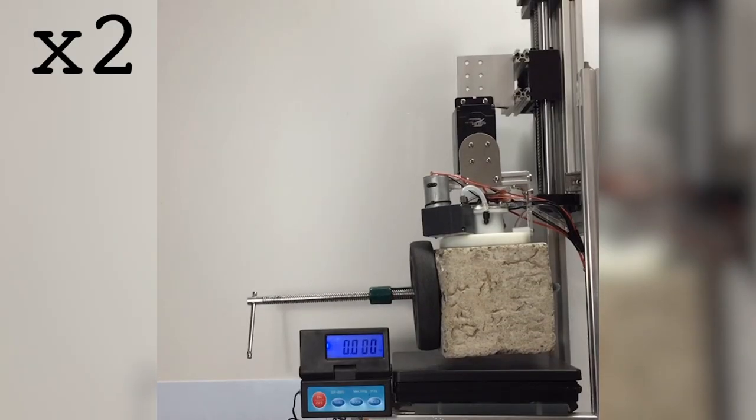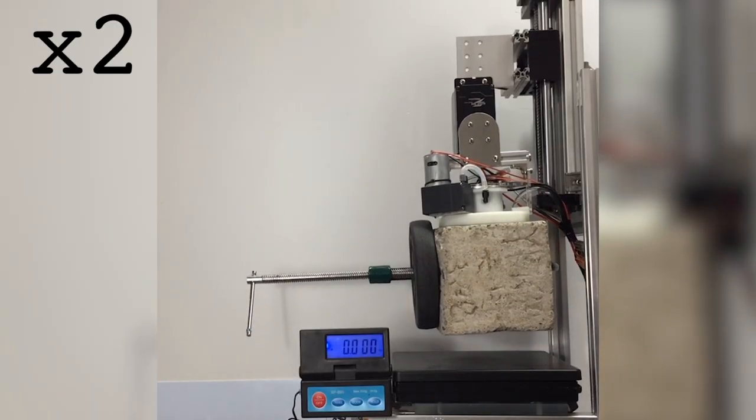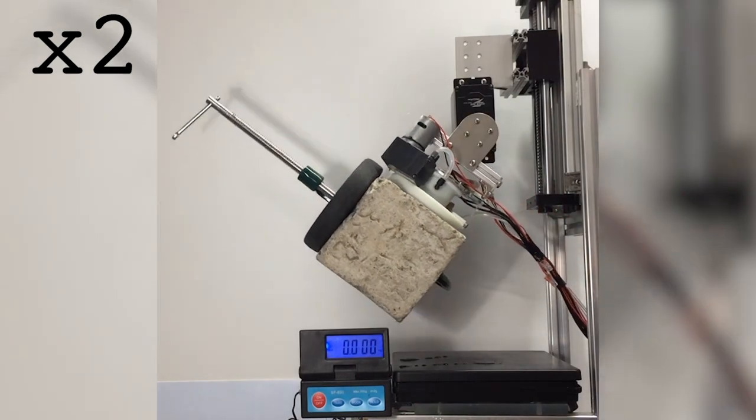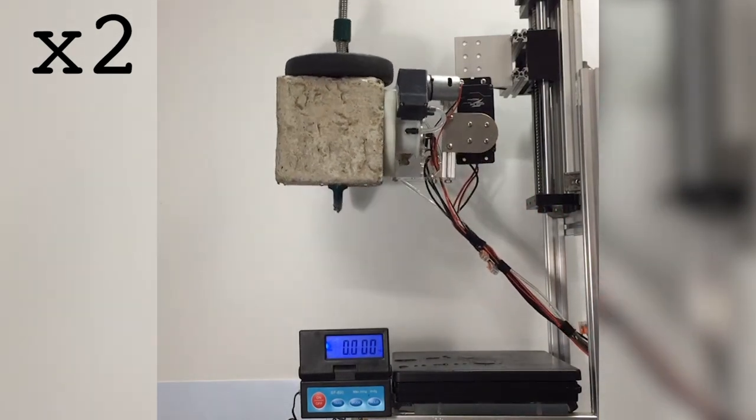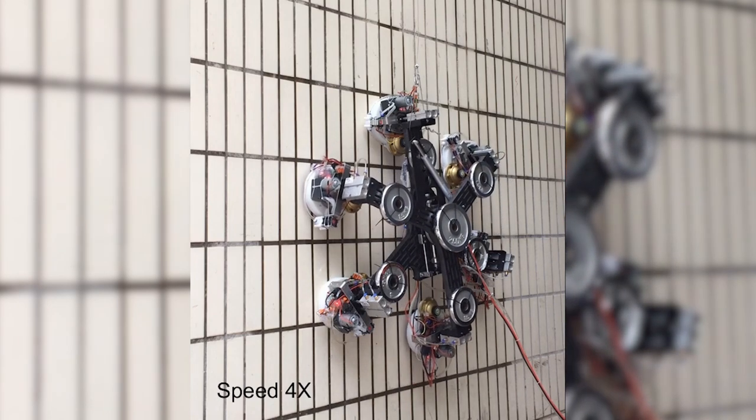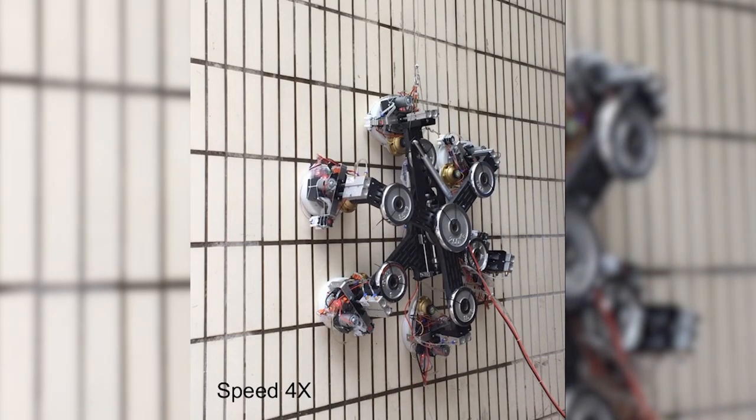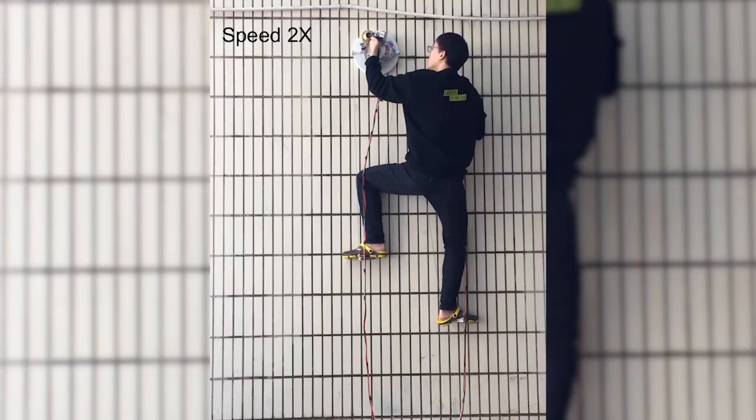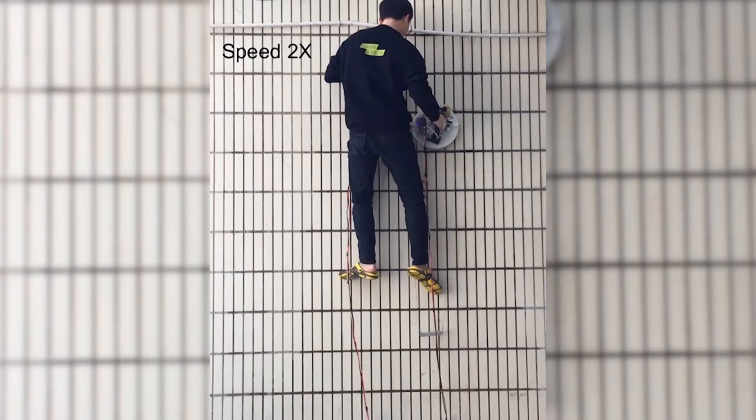The researchers tested their unit with three different suction sizes and applications: on a robotic arm to grip and handle objects, on a hexapod wall-climbing robot, and as a Spider-Man-like wall-climbing device with a foothold dangling from the cups.